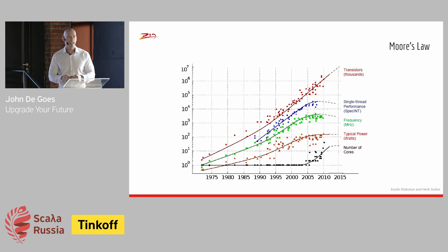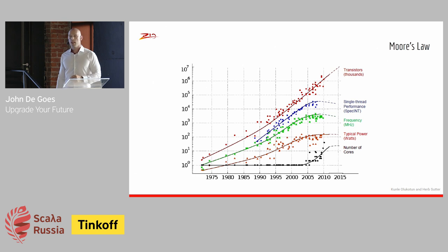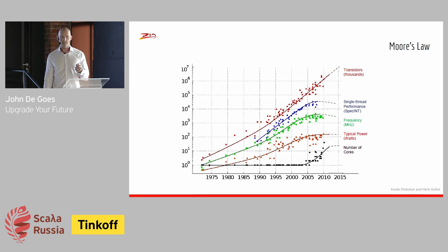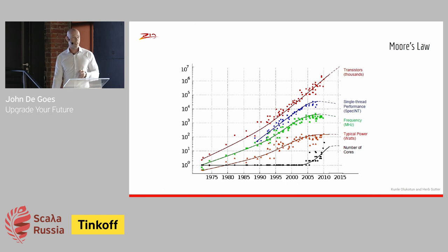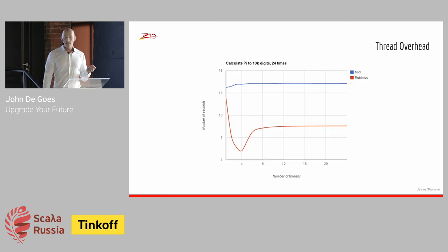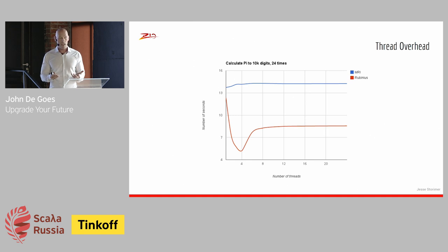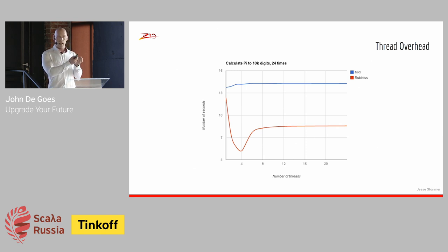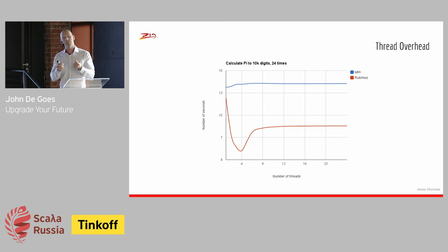That's why you can buy a desktop machine today with 32 cores, and server machines with even more. As application developers, we try to minimize latency and maximize throughput, which means we have to write parallel code. But it's not enough to just write lots of parallel code — operating systems and the JVM allow us to create hundreds or thousands of threads even if our physical machine only has a few cores. We need to pay attention to the limitations of the underlying hardware.